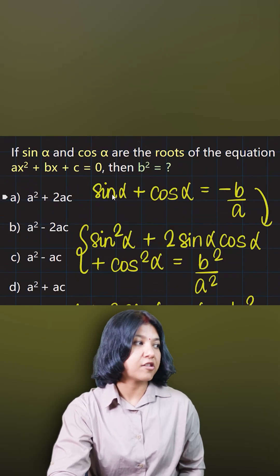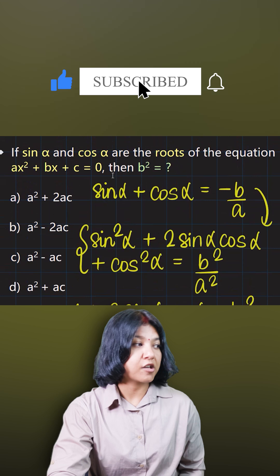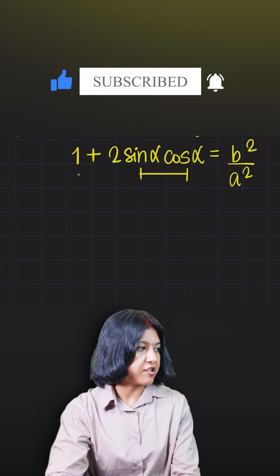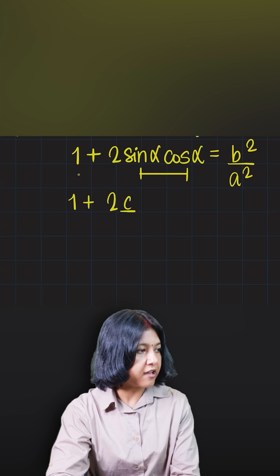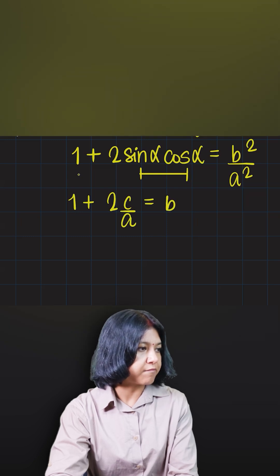So the constant here is c, so the value of the product of roots here would be just c upon a. So I'll just plug in that value: 1 plus 2 times c upon a has to give me b² upon a².